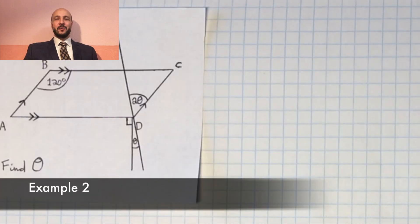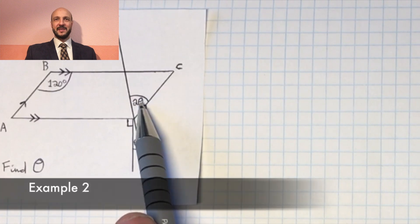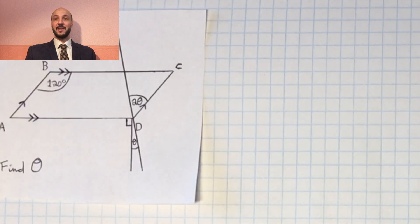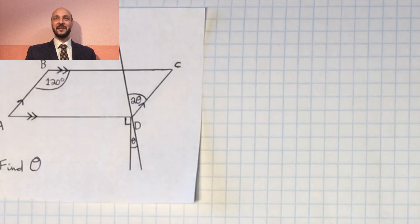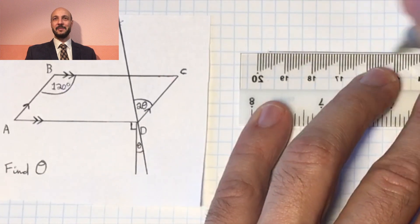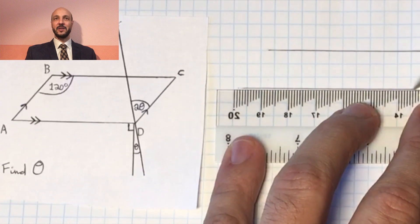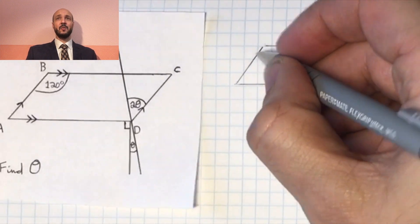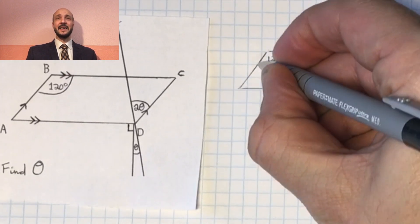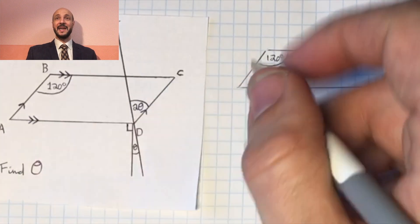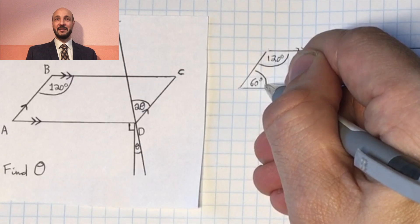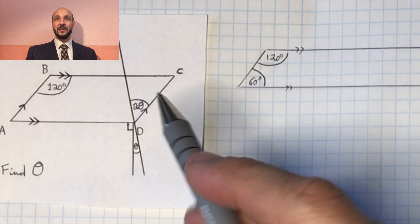Now we're given a diagram and asked to find theta. We can see 2θ and θ on the diagram and need to find relationships between the angles. Let's redraw just the relevant parts. On the left we have a pair of interior angles: 120 degrees plus angle BAD must equal 180 degrees, so BAD must be 60 degrees. We then look at another set of interior angles involving ADC, but there is an unknown angle on a straight line with 90 degrees and θ.